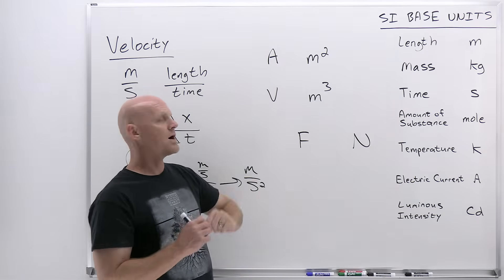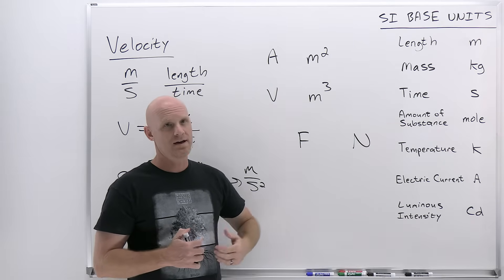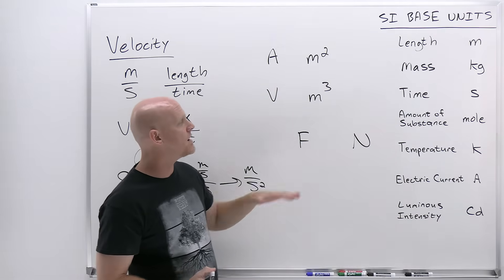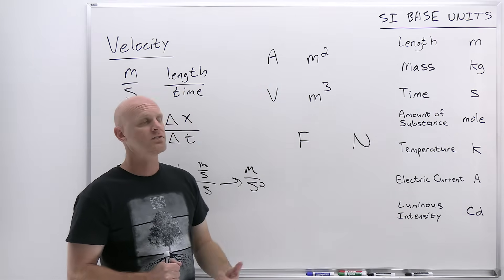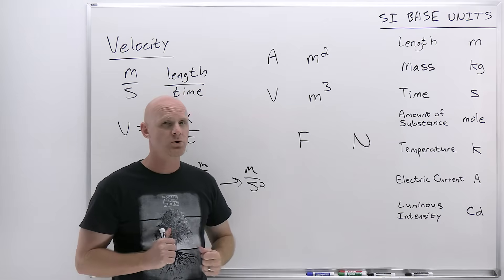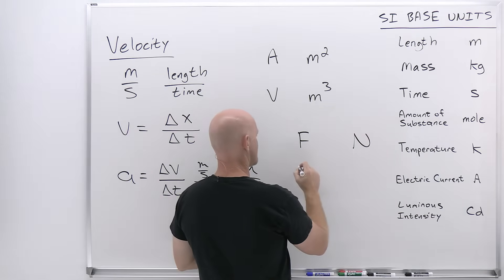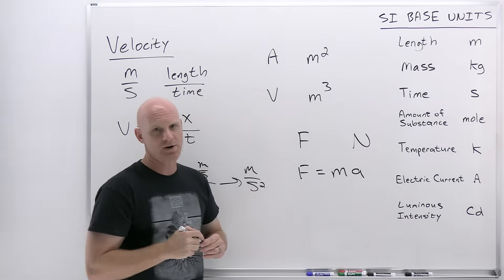How would we figure out what this combination is? Well, it turns out you've got a lot of different equations for force that you're going to be given. And it turns out you could use any one of those equations to try and come up with what the derived unit Newton is actually equal to. And it turns out the most famous equation for force you're going to be given is Newton's second law. Newton's second law is going to say that the sum of the forces is equal to mass times acceleration. F = ma.